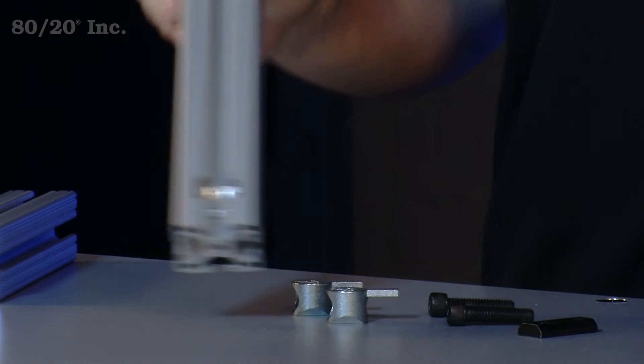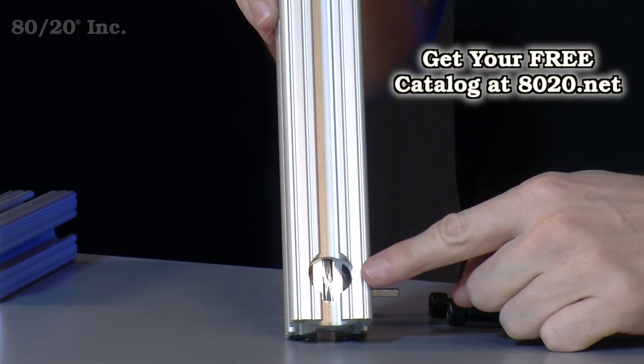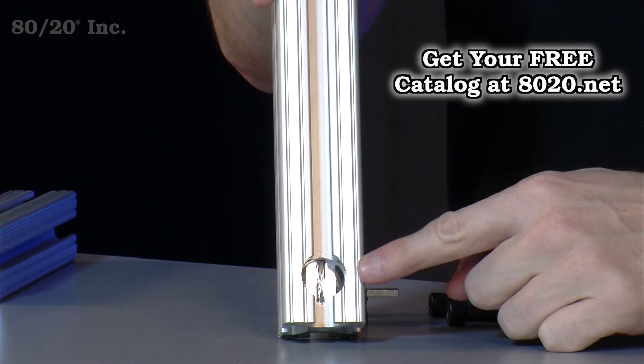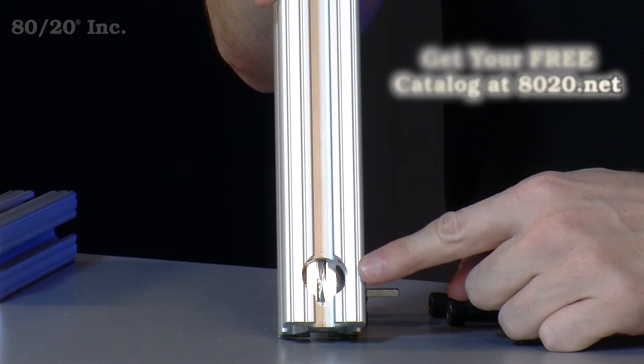Now one thing you'll want to keep in mind when using the double anchor fastener is you'll need a counterbore service into two sides of your bar. More information on the counterbore service can be found in the 8020 product catalog.